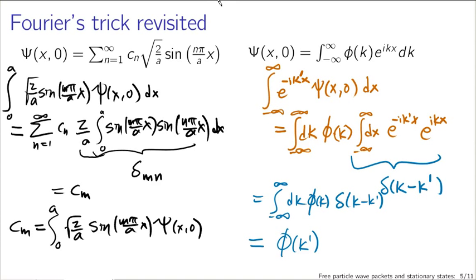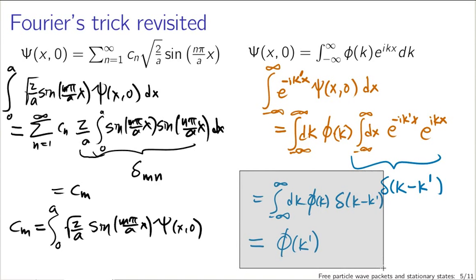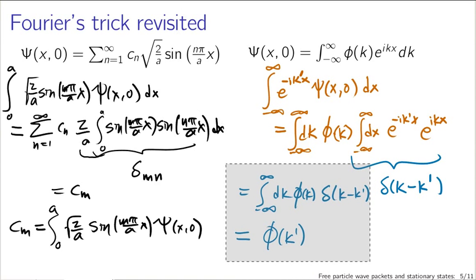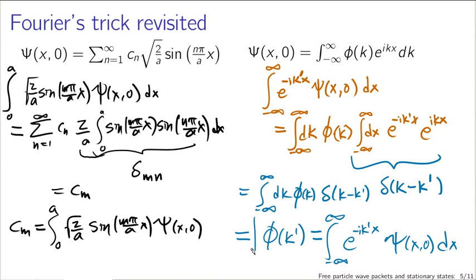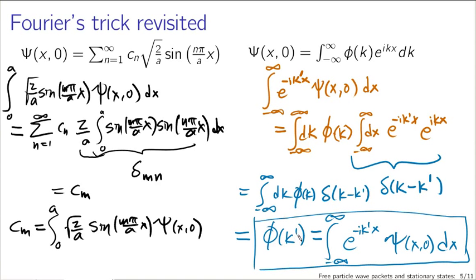That's what it means for an integral to collapse. If you're not entirely clear on how the delta function works, there's another video lecture on that. Notice that we can re-express φ(k') in terms of our left hand side: φ(k') is equal to the integral from minus infinity to infinity of e^{−ik'x} · ψ(x,0) dx. This completely determines φ(k).